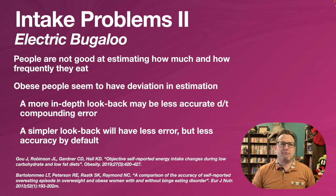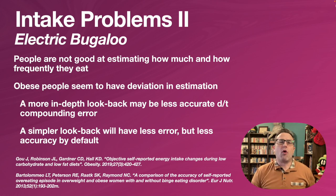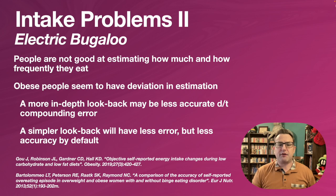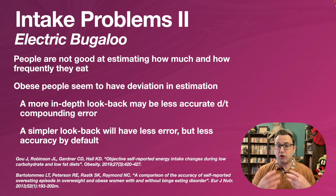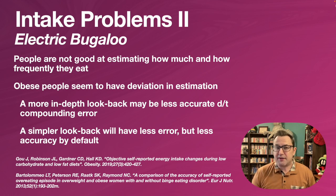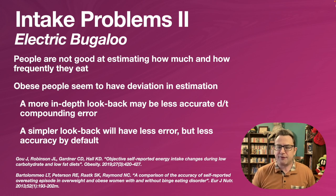Another problem — and almost the biggest one — is that people are not good at estimating how much and how frequently they eat. This seems to be more of a deviation in obese patients than non-obese, but everybody is pretty bad at it. A more in-depth look back will have more detailed information, but it may be less accurate due to compounding errors. If somebody is not remembering things well or not telling you everything, this detailed information is going to compound its incorrectness throughout the whole questionnaire. On the other end, a simple look back will have less error but by design will also be less accurate. Either way, you have some challenge.